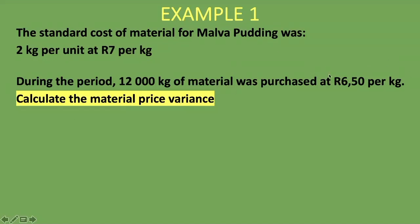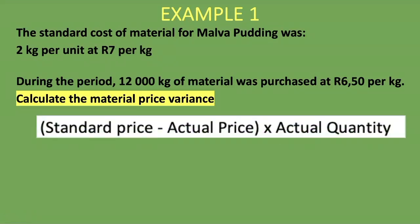We are also told that during the period, 12,000 kg of material was purchased at 6 rand 50 per kg. This is the actual price we incurred — we paid 6 rand 50 per kg while we estimated we would pay 7 rand per kg. Remember the formula: standard price minus actual price, multiplied by actual quantity. Our standard price is 7 rand.